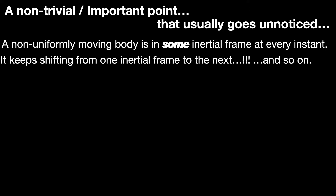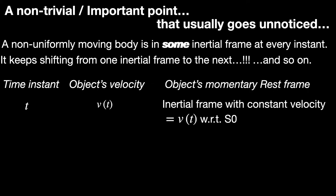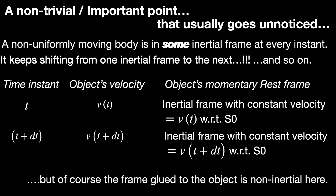To put it in terms of calculus: at time instant t, the body has velocity v(t) with respect to us — we are the inertial observer S0. So at time instant t, it appears to be at rest in an inertial frame S1 that has a constant velocity equal to v(t) with respect to S0. After an infinitesimal time dt, the velocity changes to v(t+dt), and at time t+dt the body is at rest in a different inertial frame S2 moving with velocity v(t+dt) with respect to S0. So accelerating or decelerating objects can be thought of as shifting through a series of inertial frames, but the object's own rest frame — glued to the object — is changing velocity, so it is of course non-inertial.